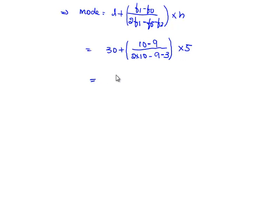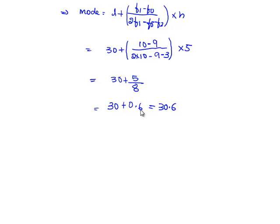Solving this we get 30 + (5/8), that is 30 + 0.6. Hence the mode of the given data is 30.6.